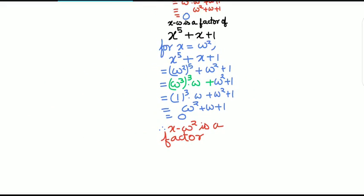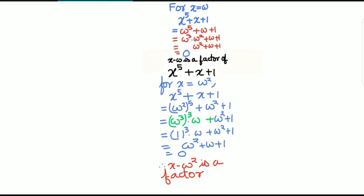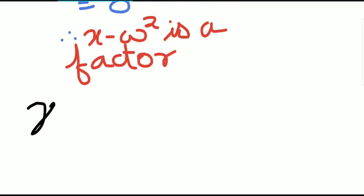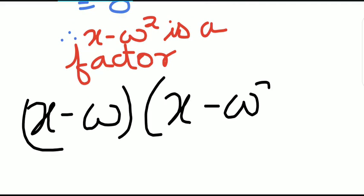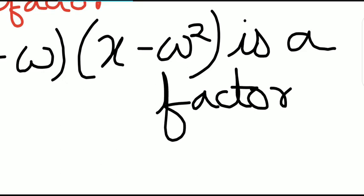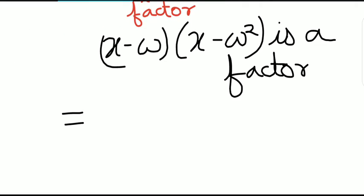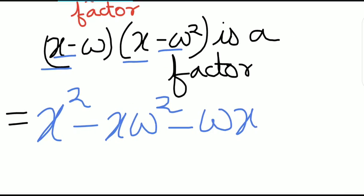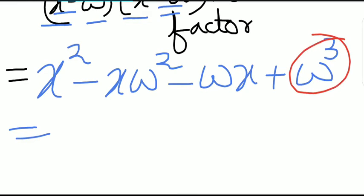Earlier we observed that x minus ω is a factor, and now we observe that x minus ω squared is also a factor. Let us combine these two: x minus ω into x minus ω squared is a factor. Let us multiply this out. x times x is x squared, minus x times ω squared, minus ω times x, plus ω times ω squared equals ω cubed. Since ω is the complex cube root of unity, ω cubed equals 1.